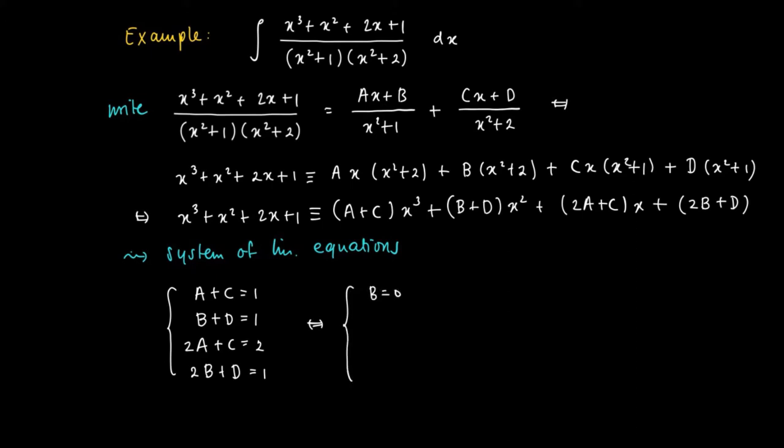Well, this is a very easy system for which we find the solution B equals 0, D equals 1, A equals 1, and C equals 0.